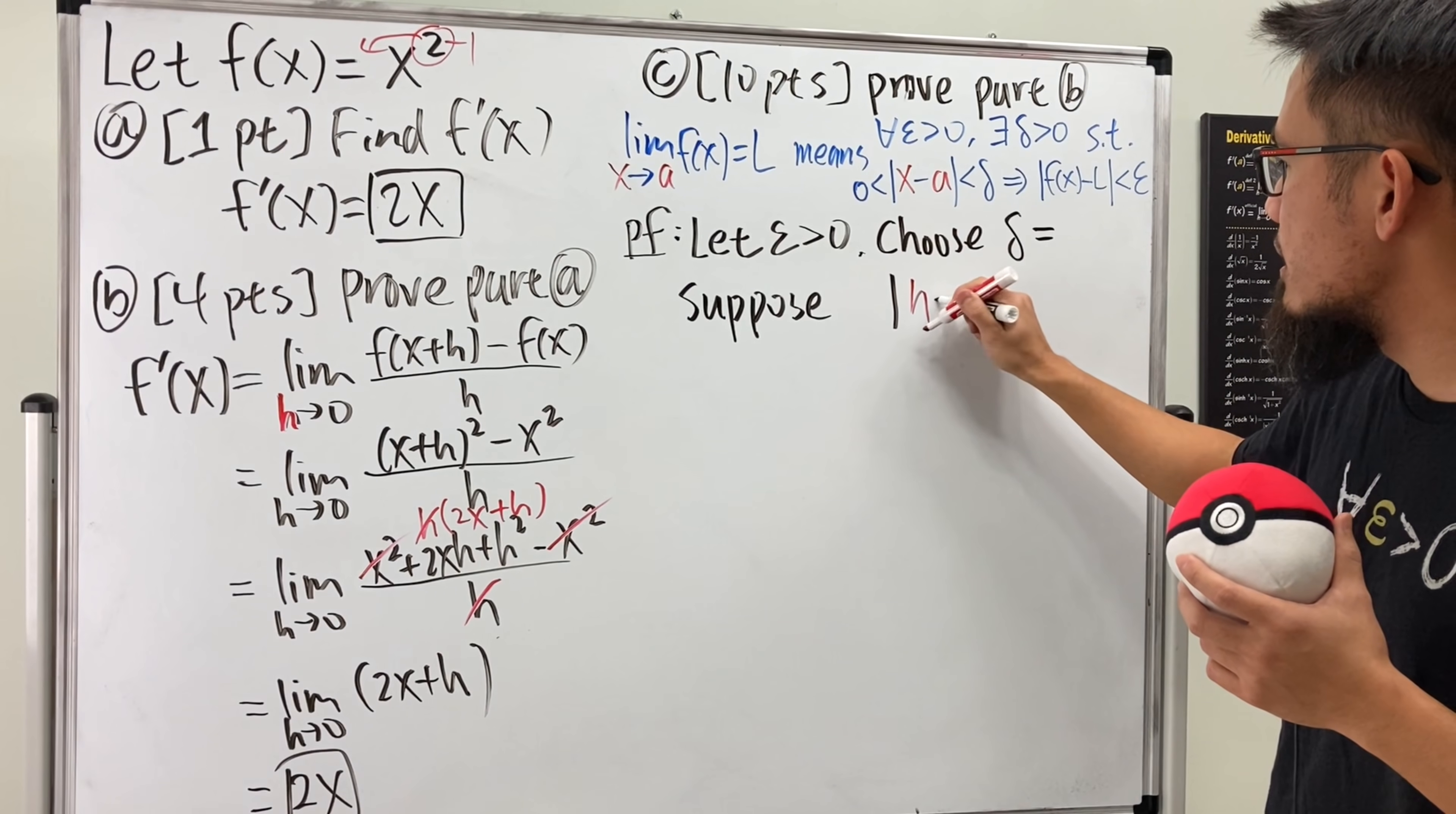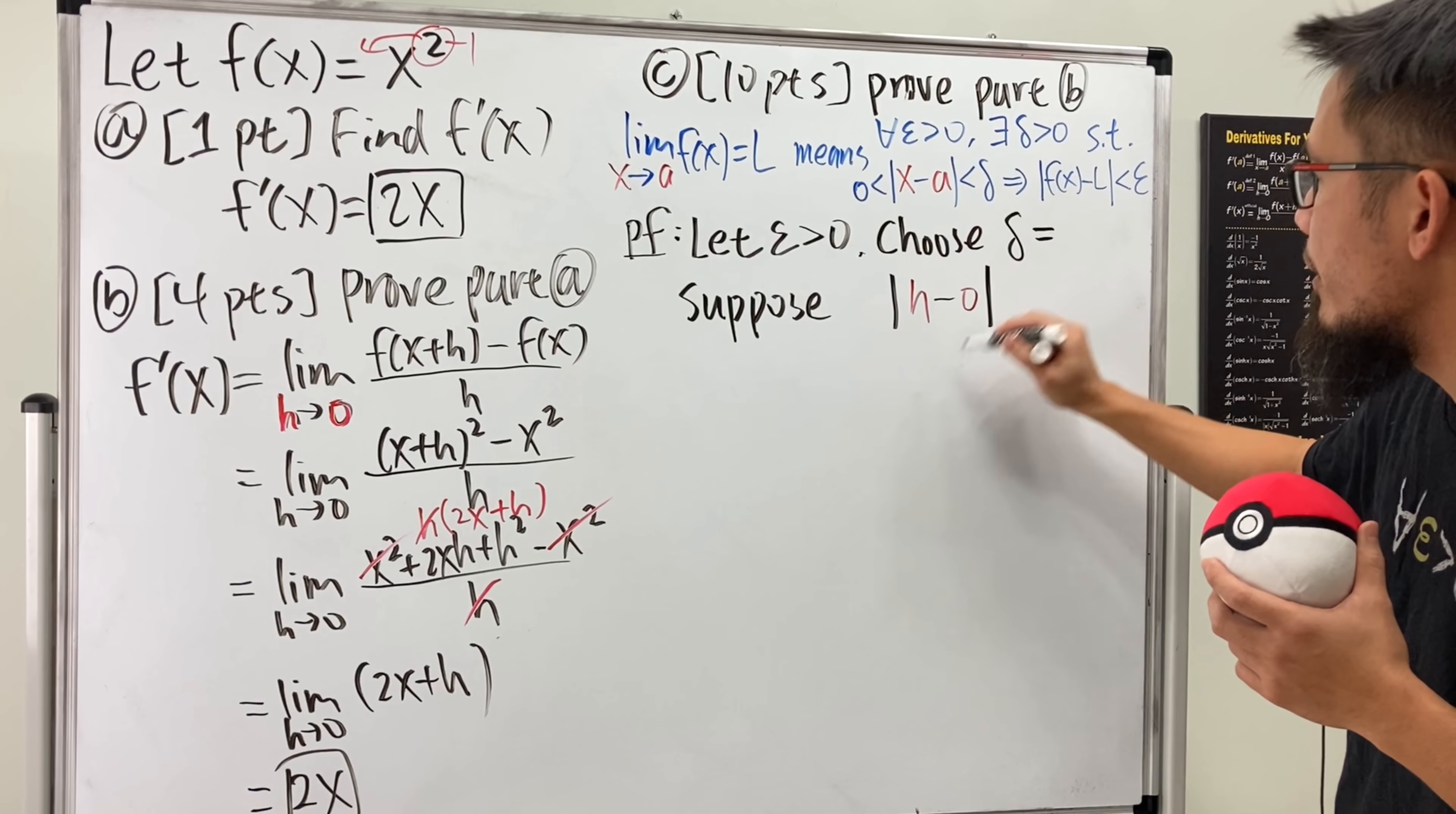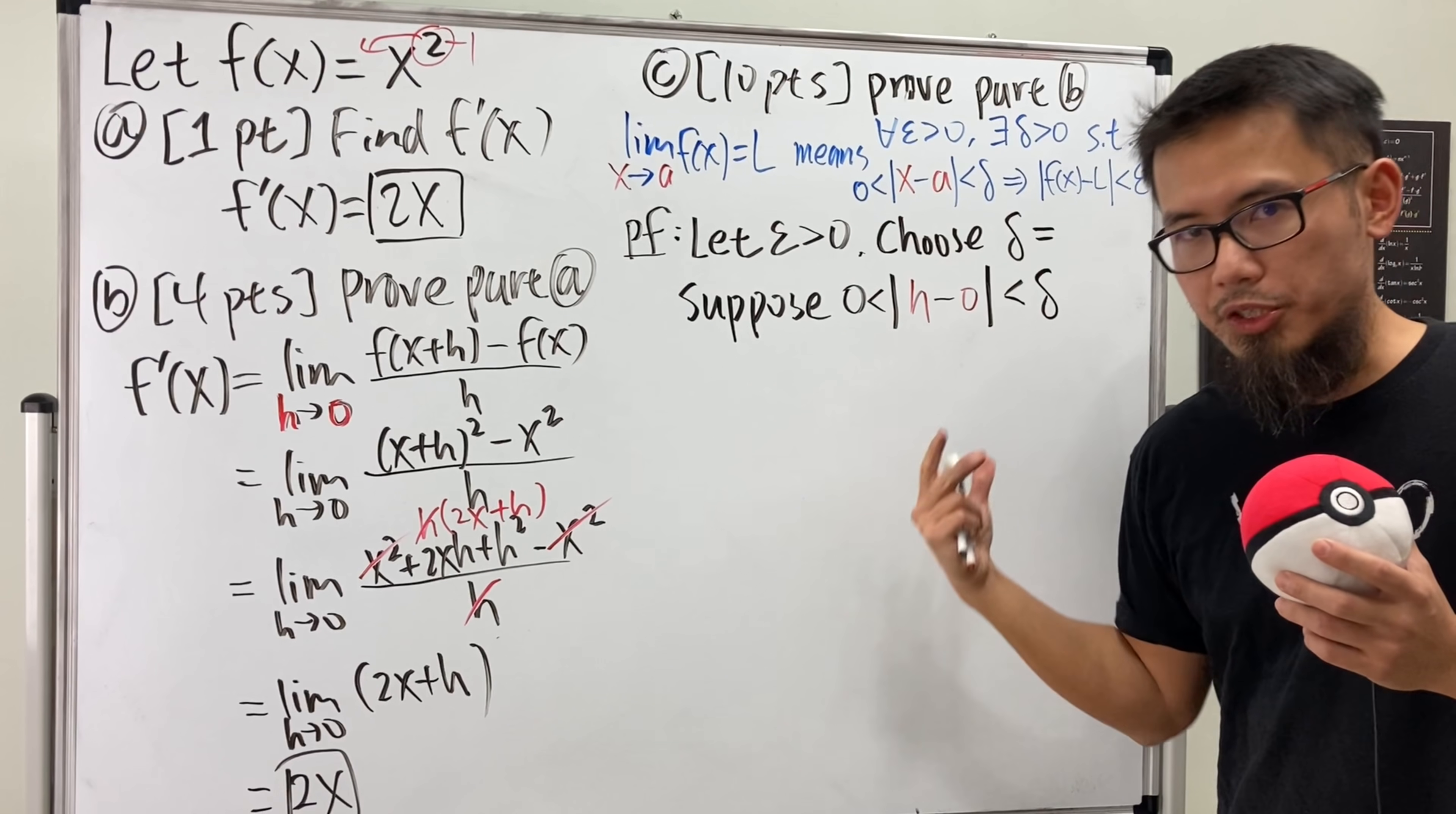So I will just put down h right here, and then the minus, and then we have the a, which is actually our zero here. So you can see, we want to have h minus zero in the absolute value. We want this to be greater than zero, and we want this to be less than delta. So suppose this is true.